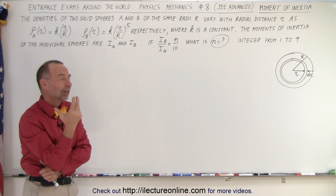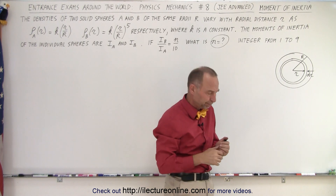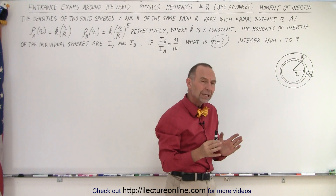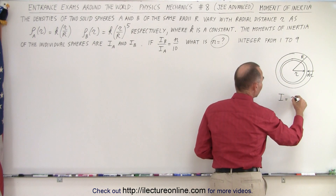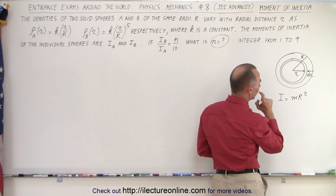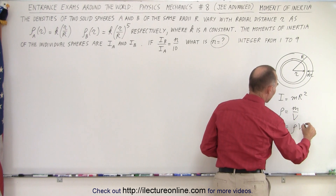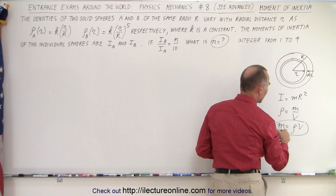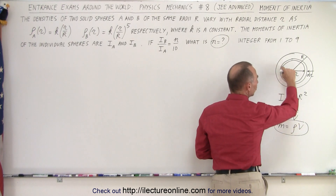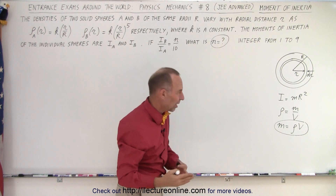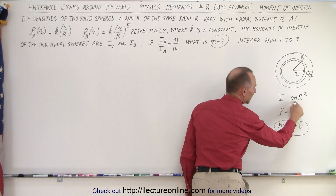What is the strategy? We're going to calculate the moment of inertia using integration. We need a relationship between mass and density. The moment of inertia of a point object is mr squared, and density equals mass divided by volume, which means mass equals density times volume. So we have to find the mass of each individual shell inside the sphere, use that to calculate the moment of inertia of each shell, and then integrate over all the shells.